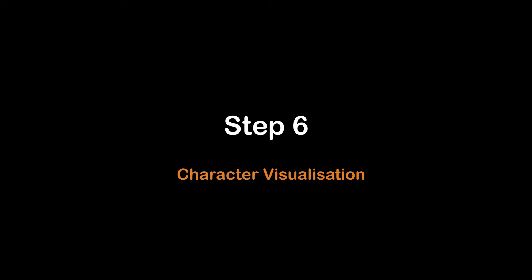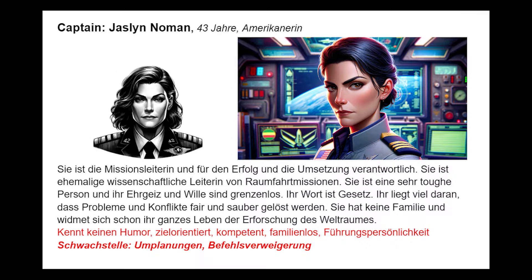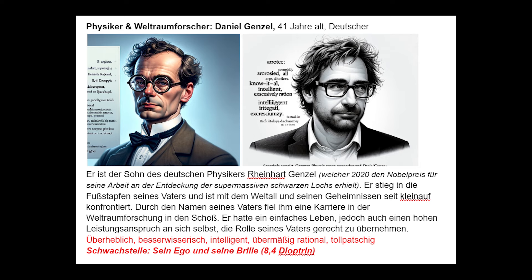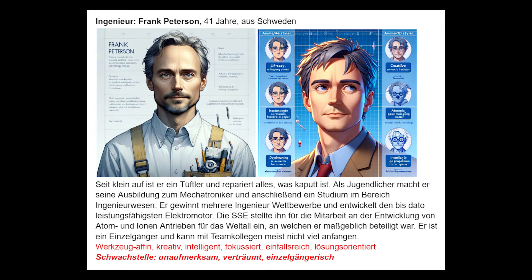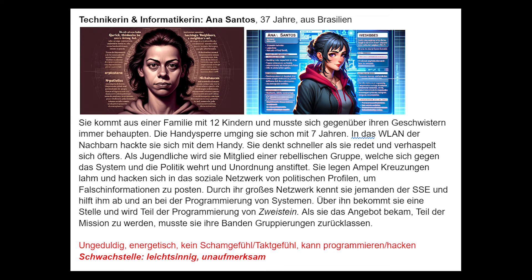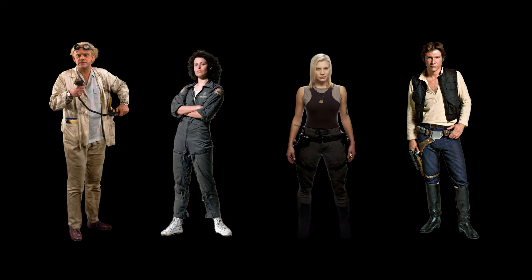Step six: create the look of the characters. You have already created your characters in step one — now make them visible. Create or generate the look of your characters. You need a high-quality, frontal, full-body image with all necessary details visible, such as the face, hair, clothes, shoes, etc.